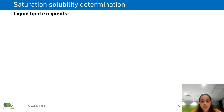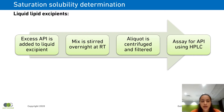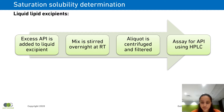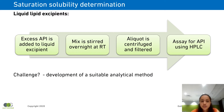Next I'll be talking about the saturation solubility determination in liquid lipid excipients. The procedure here requires adding excess of the API to the liquid excipient. This mix is then stirred overnight at room temperature. An aliquot is taken and is centrifuged and filtered. This filtered aliquot is then appropriately diluted and assayed for API using HPLC. The major challenge when working with liquid lipid excipients is development of a suitable analytical method.